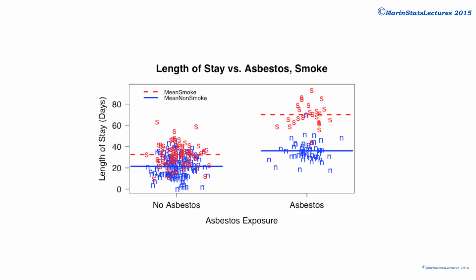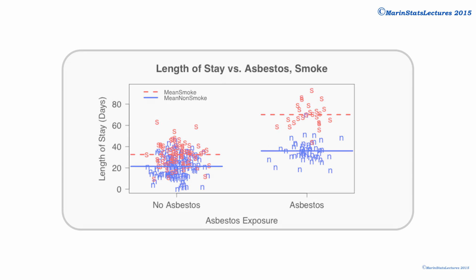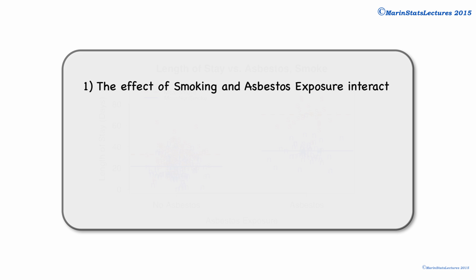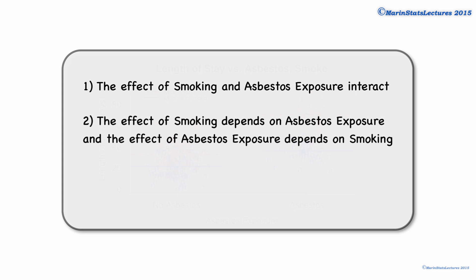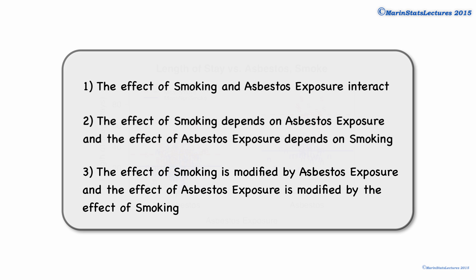We can also see that the effect of exposure on the length of stay depends on whether or not they smoke. Here we can see the effect of exposure to asbestos for non-smokers, and here we can see the effect of exposure to asbestos for a smoker. The effect of asbestos exposure is different depending on whether or not they smoke. These can all be stated in a few different ways: the effect of asbestos exposure and the effect of smoking interact; the effect of smoking depends on asbestos exposure and vice versa; or the effect of smoking is modified by asbestos exposure and vice versa.